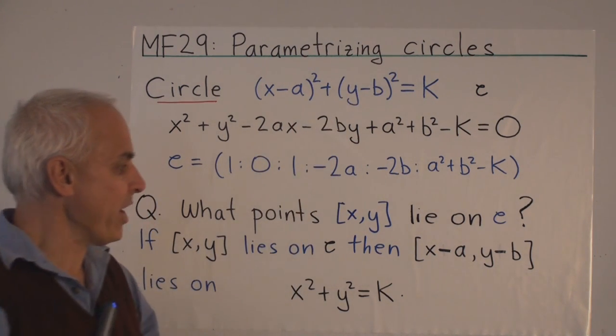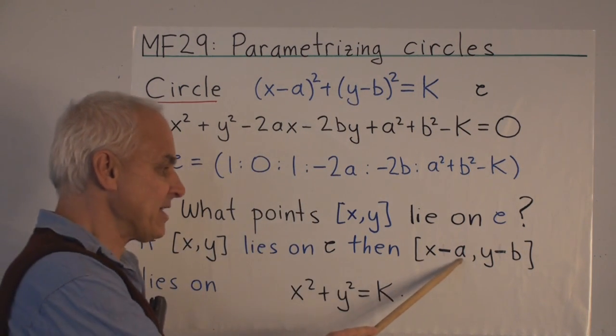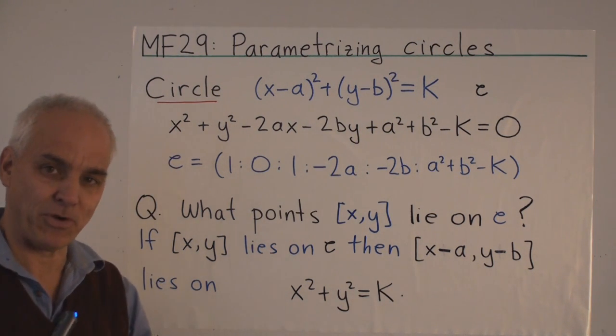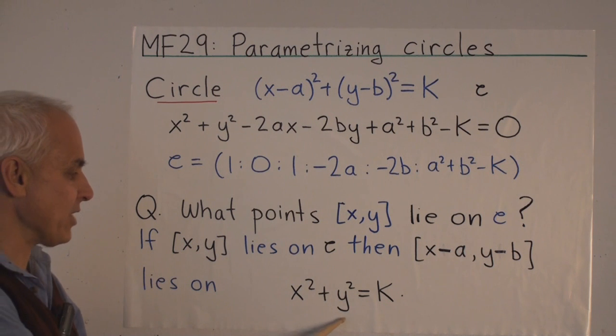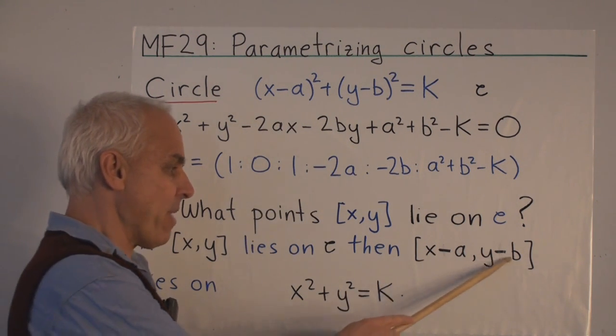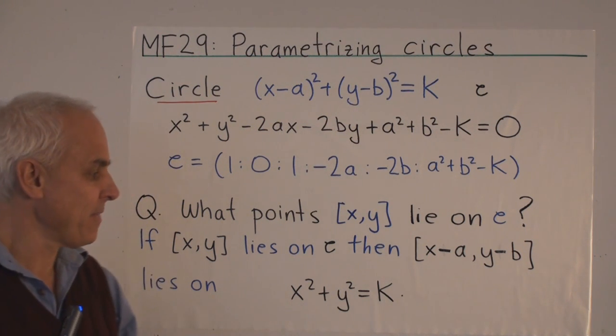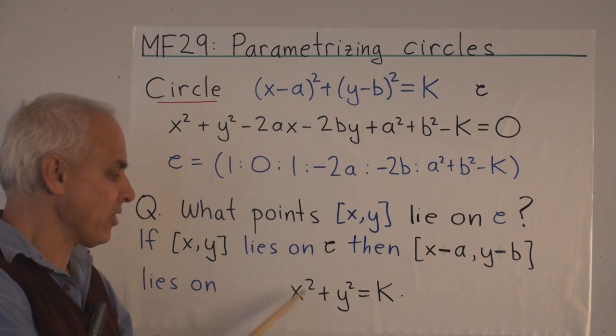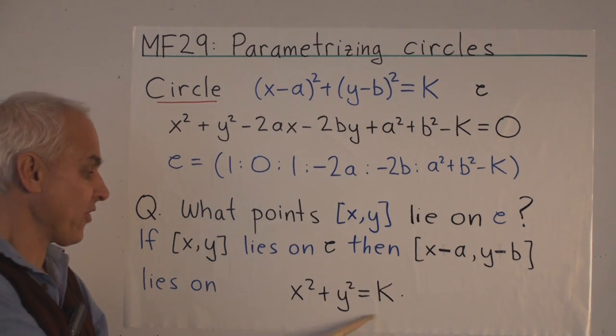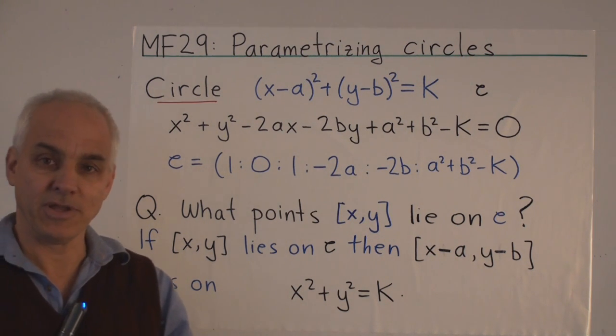It's made simpler by the observation that if (x,y) satisfy this equation, then (x-a, y-b) satisfy this somewhat simpler equation: x² + y² = K. And since going from (x,y) to (x-a, y-b) is simply a shift, we can without loss of generality restrict ourselves to simpler circles of this kind—circles whose center is at the origin.